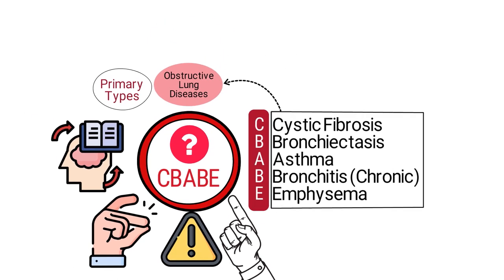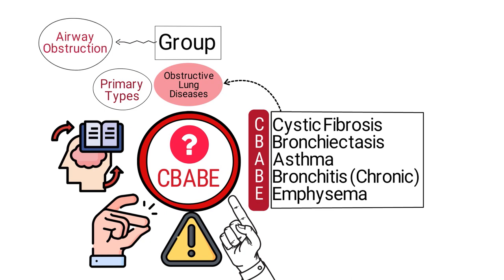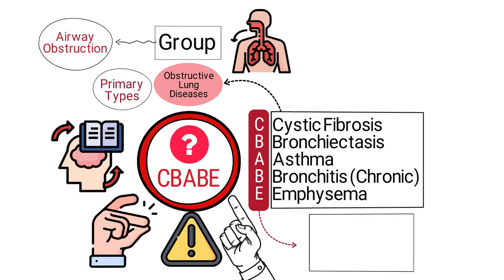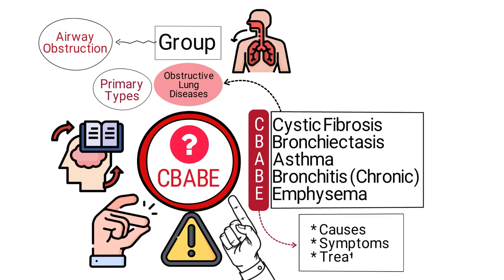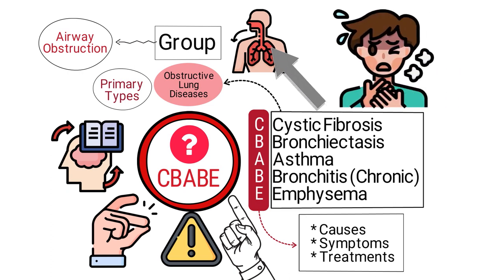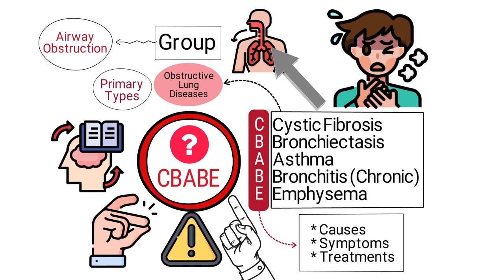As a reminder, obstructive lung diseases are a group of respiratory disorders characterized by airway obstruction, limiting the outflow of air from the lungs. Each of these diseases has unique causes, symptoms, and treatments, but they all involve the obstruction of airflow, leading to breathing difficulties. Now let's talk more specifically about each type.